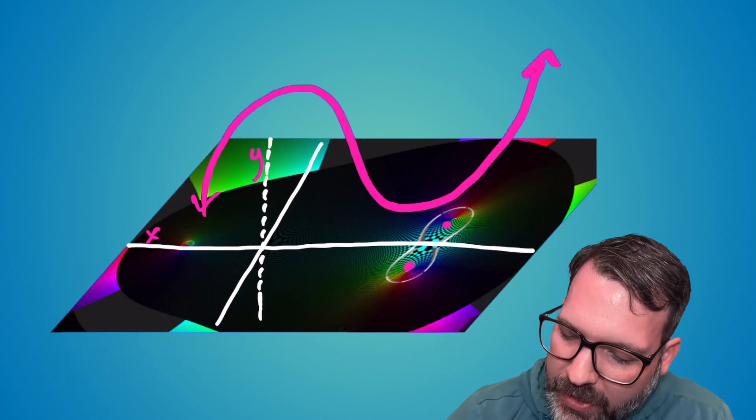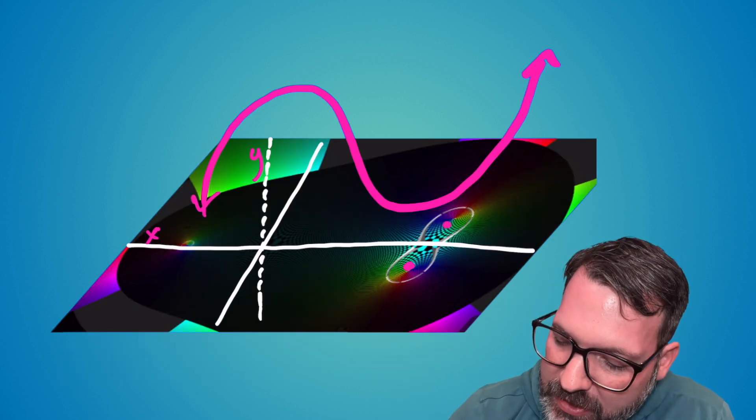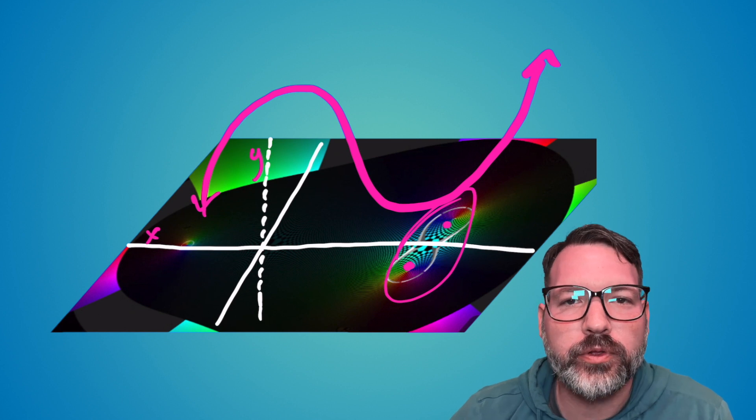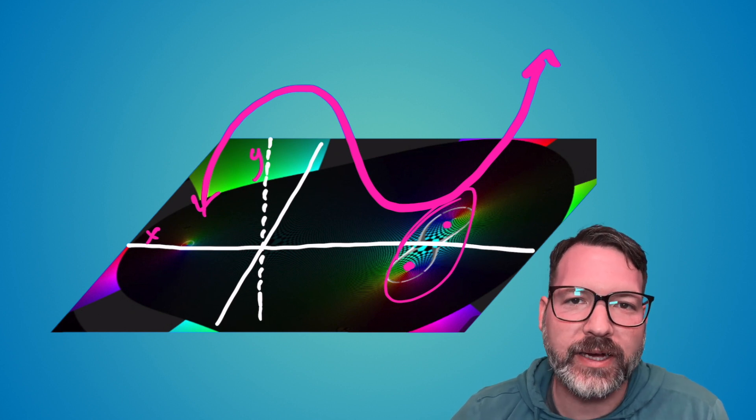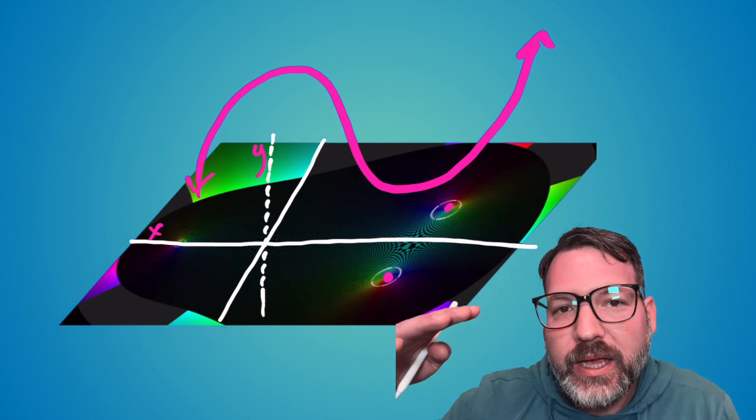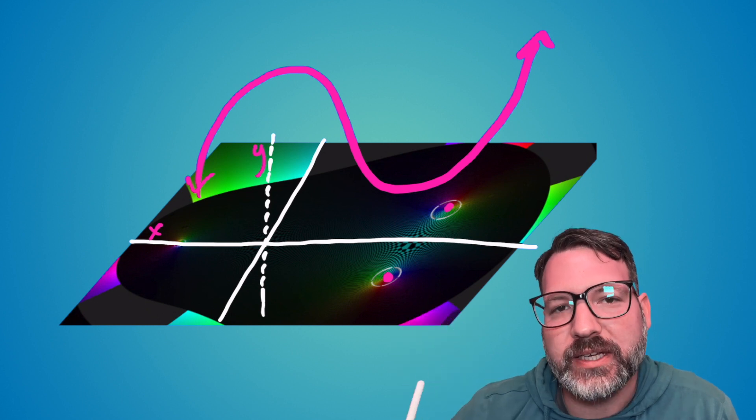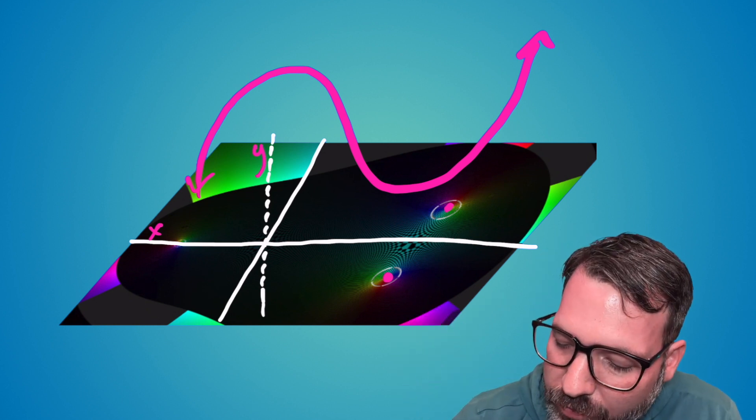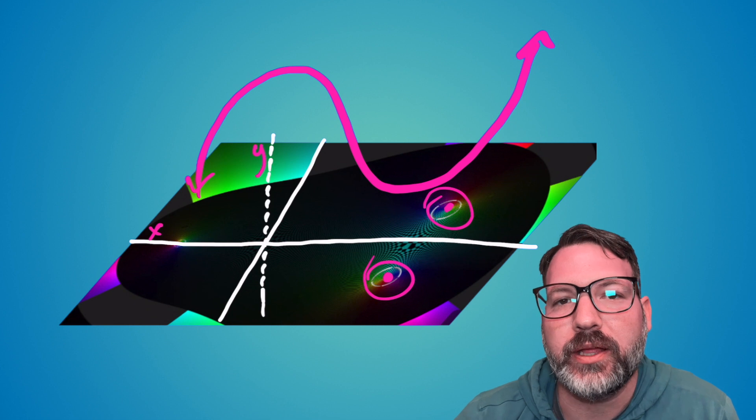As we take the original slice further and further up, we can see those solutions getting further and further away from our real axis, to the point where when it gets high enough above the positive x-axis, we can see two very distinct roots out in the complex plane.